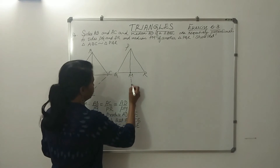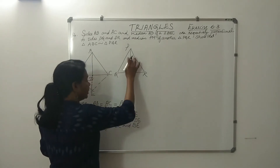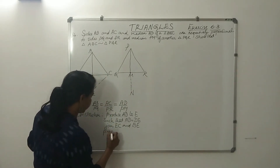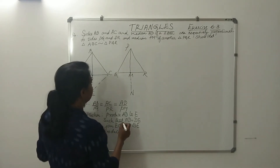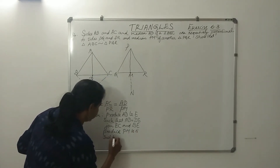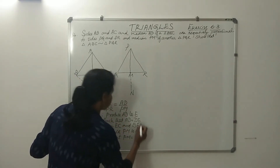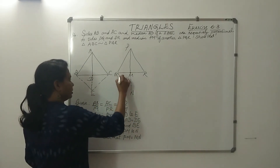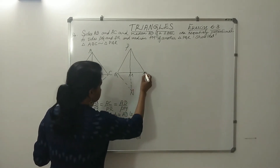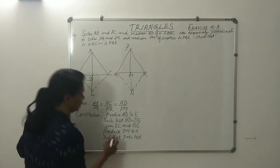Similarly, produce PM to a point N such that PM equal to MN. Produce to point N — PM equal to MN. Now, join Q and R; join QN and RN.